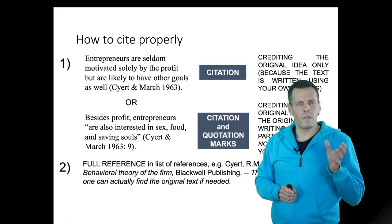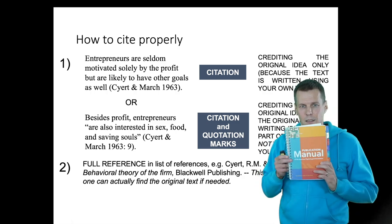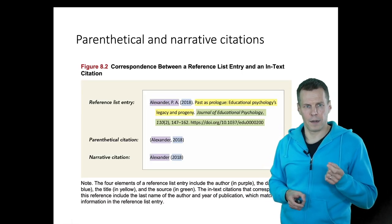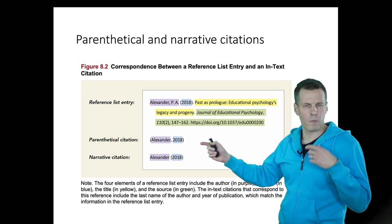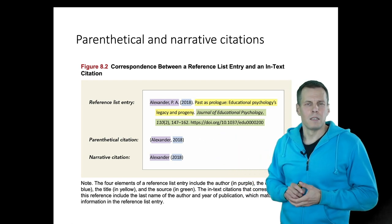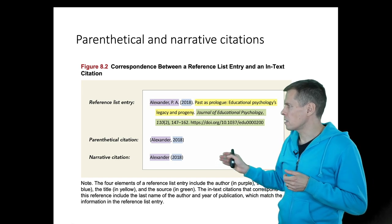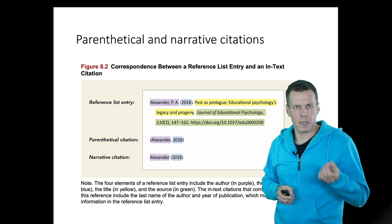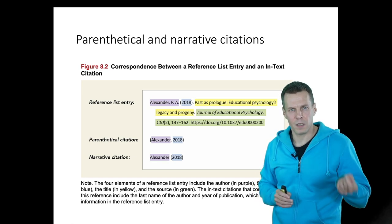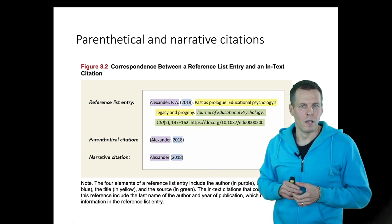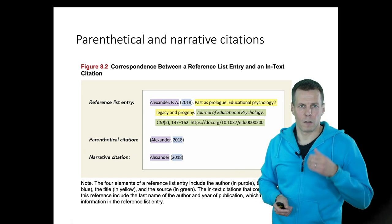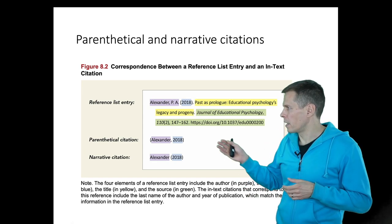There are two different styles of citation in APA style, which most academic journals in management use: parenthetical and narrative citation. Parenthetical citation means the citation is fully in parentheses and not part of the sentence. Narrative citation is where the author's name is part of the sentence and the year is in parentheses. If you want to focus on the author or a specific study, narrative citation is better. If you just want to express a fact and cite a source without going into details of how it was established, you use parenthetical citation.